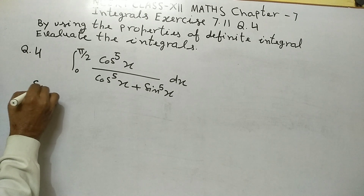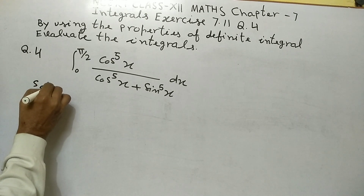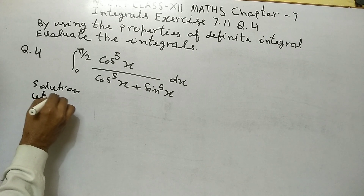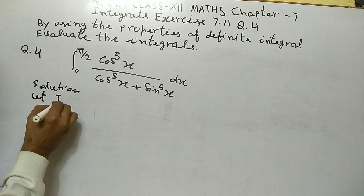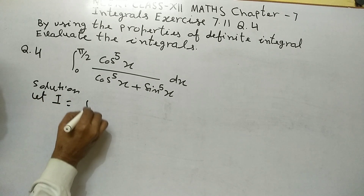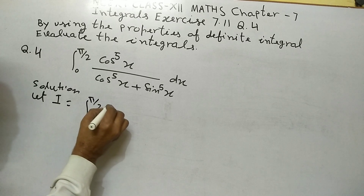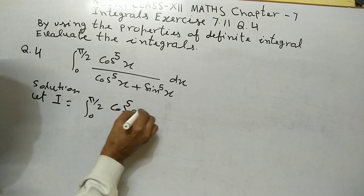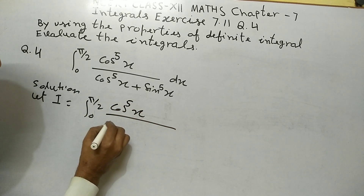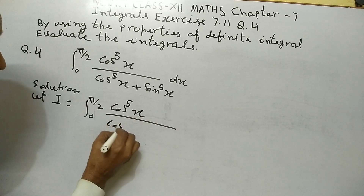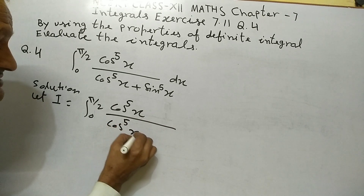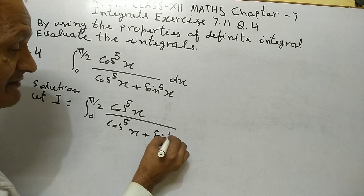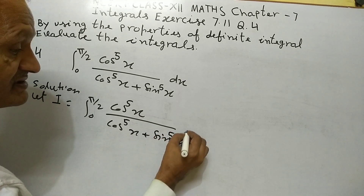So now, solution. Let I equal integral from 0 to π/2 of cos⁵x upon (cos⁵x plus sin⁵x) dx. This is equation 1.